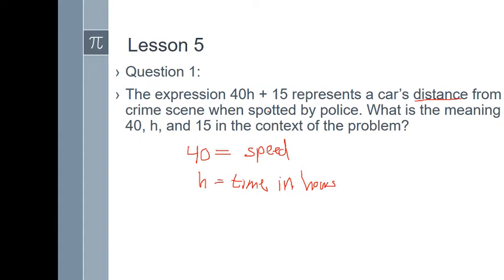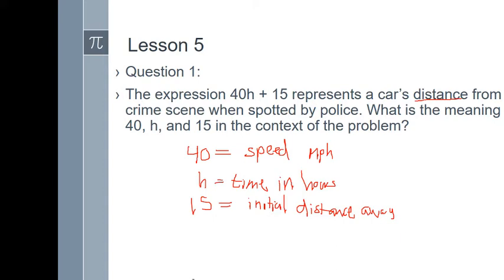And the 15 out here, the 15 at the end, what we call the constant term, that's going to be the initial distance from the crime scene. And again, it could be miles, but it doesn't say in this problem, so it could be kilometers. Let's just, for argument's sake, say it's miles. Then the 40 would be the speed in miles per hour. The time, H, would be the time in hours. And 15 would be that he started away 15 miles away from the crime scene, or he was 15 miles away when he was first spotted by police.